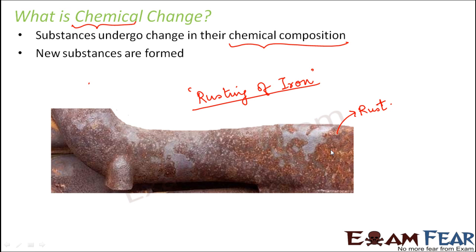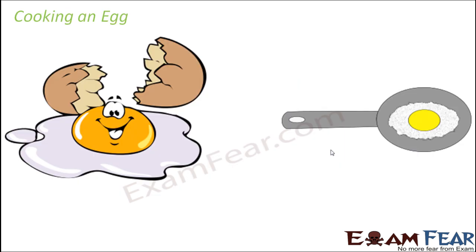In rusting, it is not only the appearance but also the chemical composition that has changed. Let us look at more examples. The first is cooking an egg. Remember that breaking an egg was a physical change because only the shape and size were altered and the chemical composition remained the same. But when you cook the egg — break it first, put it on a pan, and prepare an omelette — something different happens.